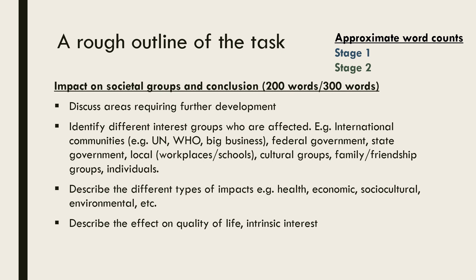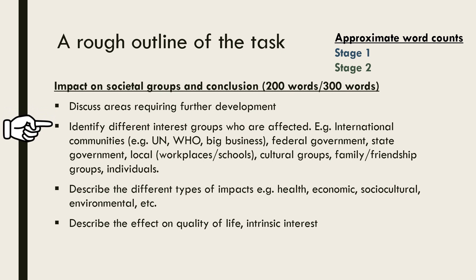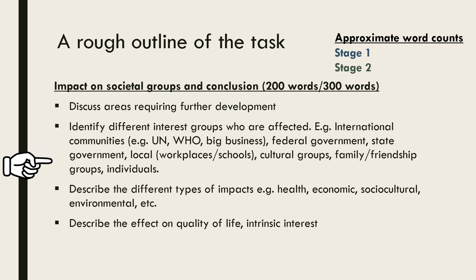This brings us to the final part of the task: the discussion of impact and conclusion. This can include talking about areas that require further development or identifying interest groups that will be affected by the research. There are lots of different types of impact that may be relevant, such as environmental, socio-cultural, health or economic impacts. It's also worth describing the effect the focus area and research will have on quality of life.